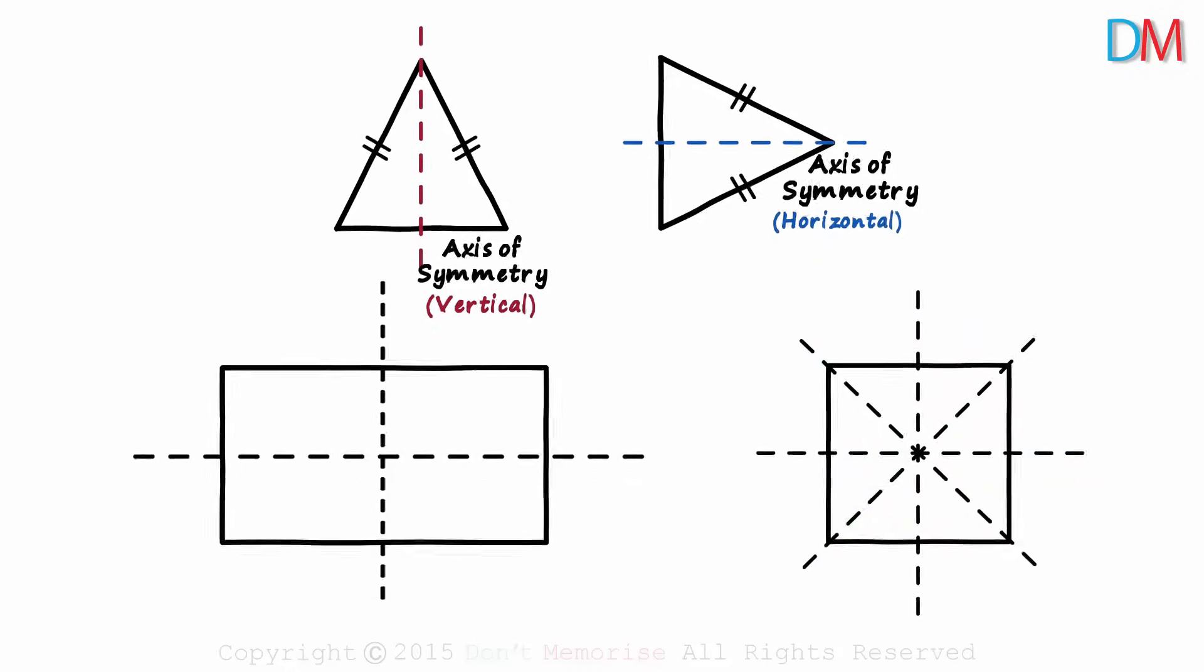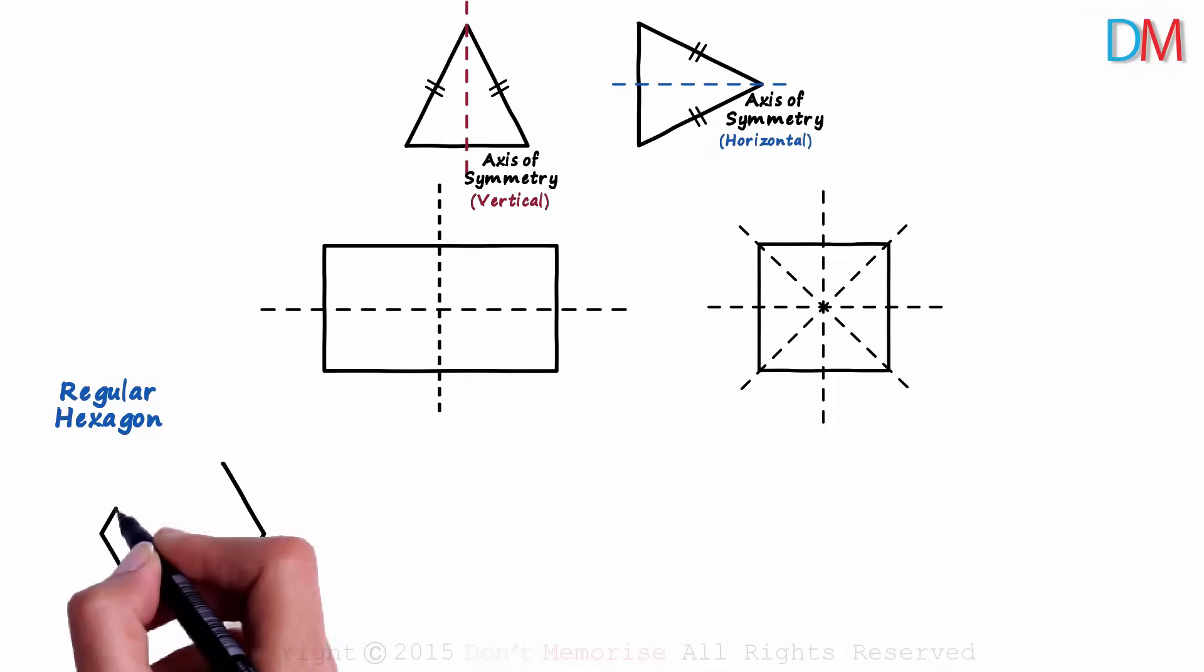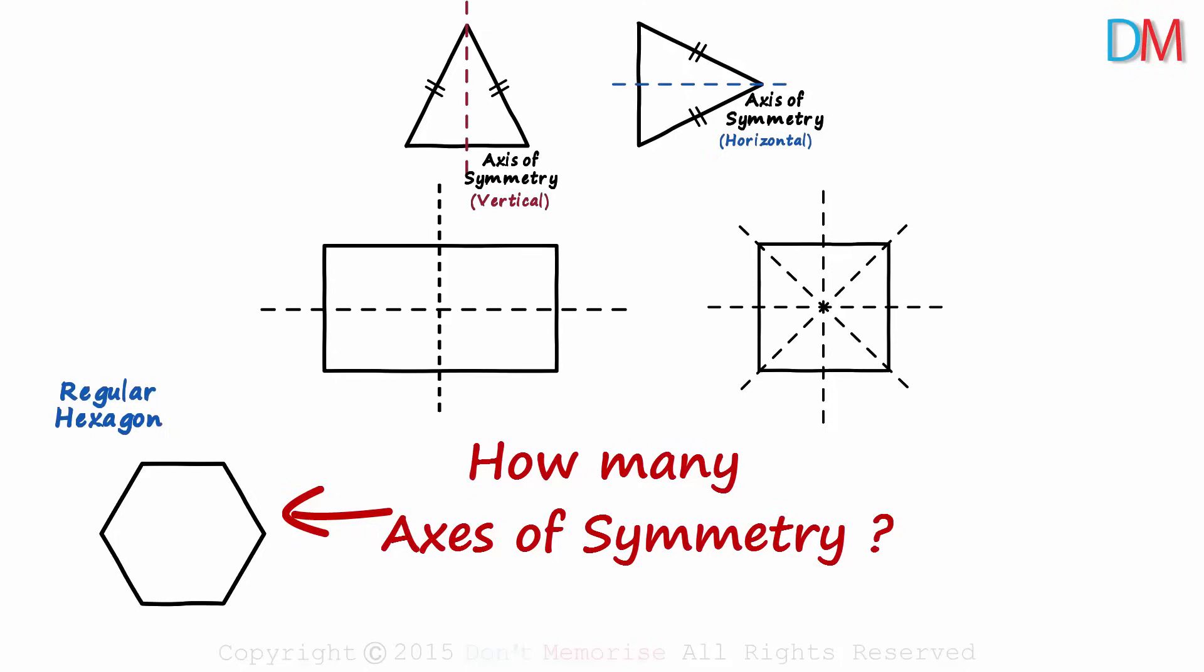More than four? What if we have a figure like a regular hexagon? A regular hexagon is a closed figure with six equal sides and six equal angles. How many axes of symmetry does a regular hexagon have? Pause the video and try to arrive at the correct answer.